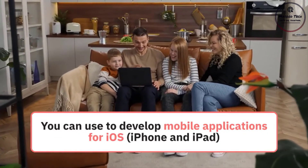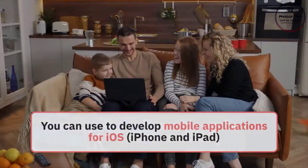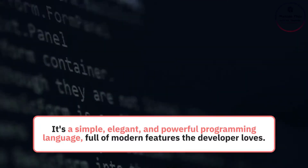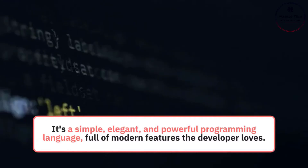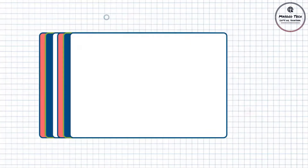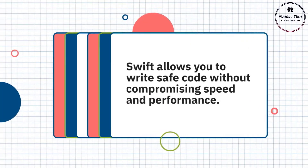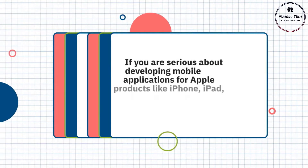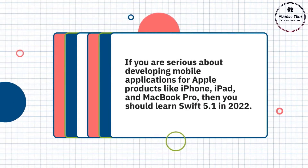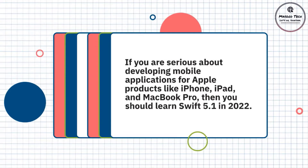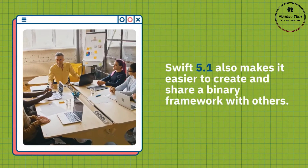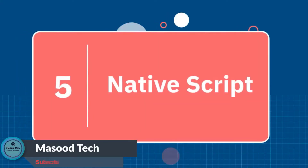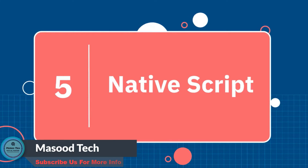Number four: Swift. Swift is a programming language from Apple which you can use to develop mobile applications for iOS (iPhone and iPad), macOS (MacBook), watchOS (Apple Watch), tvOS (Apple TV), and beyond. It's a simple, elegant, and powerful programming language full of modern features developers love. Swift allows you to write safe code without compromising speed and performance. If you are serious about developing mobile applications for Apple products, you should learn Swift 5.1 in 2022, which also makes it easier to create and share binary frameworks.